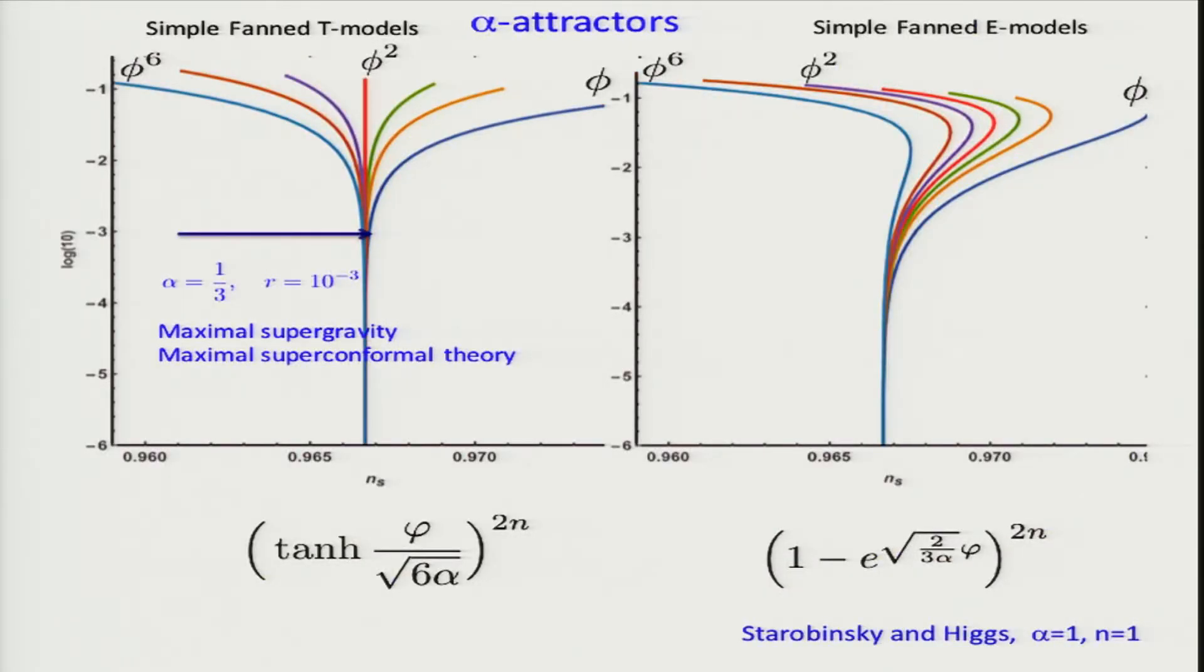Here is NS - the reason these models are called attractors is because at very large alpha they could be phi squared or phi to the sixth or whatever, but then they all attract to the same predictions. The value which is the maximal target, 10 to the minus 3, is in fact associated with either maximal supergravity or maximal superconformal symmetry. For those who've seen the Starobinsky model, this is the case N equals 1 and alpha equals 1. This is a well-known situation.